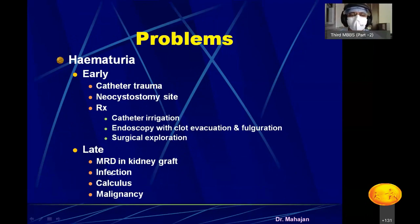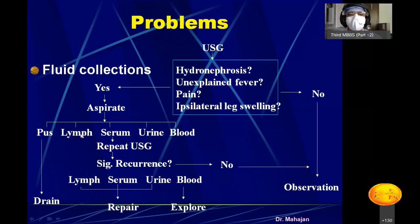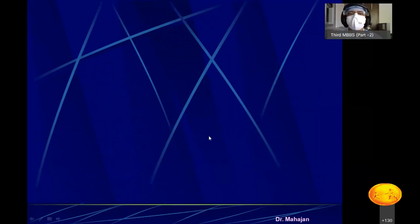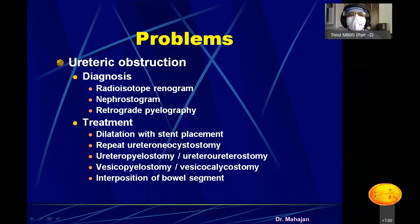Late hematuria can be due to medical renal disease, infection, calculus, or malignancy in the graft. Fluid collection post-transplant in the renal fossa — which may be pus, lymph, seroma, blood, or urine — is diagnosed by ultrasound and treated accordingly. Ureteral obstruction can be early — due to technical error, edema at the urethroneocystostomy, blood clots, or calculus — or late, due to fibrosis or calculi. Diagnosis is by DTPA renal scan or nephrostogram; treatment involves repeat urethroneocystostomy, ureteropyeolostomy, or ureteroureterostomy.